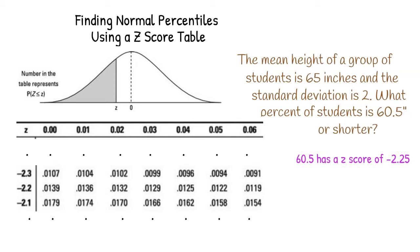To find the portion of students less than the z-value found, we locate the unit and tenth digit on the left side of the table and locate the hundredth digit on the top of the table.